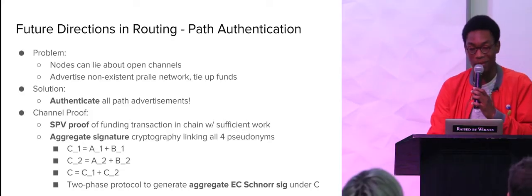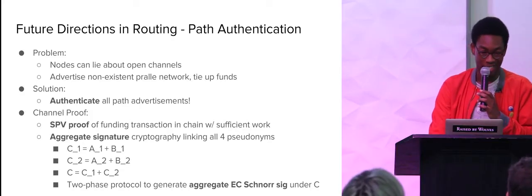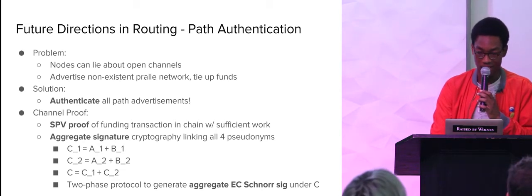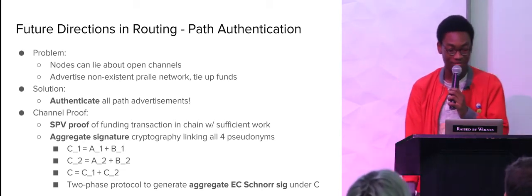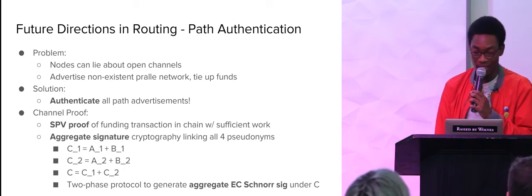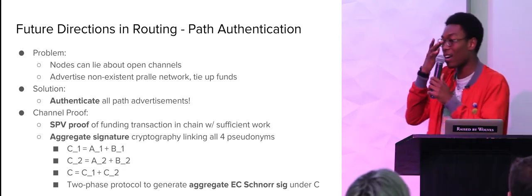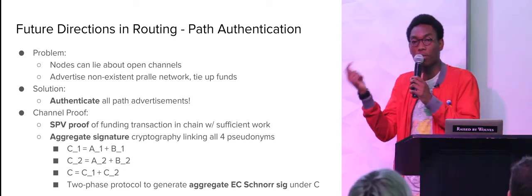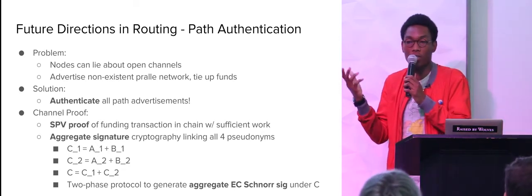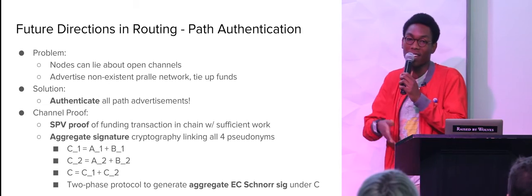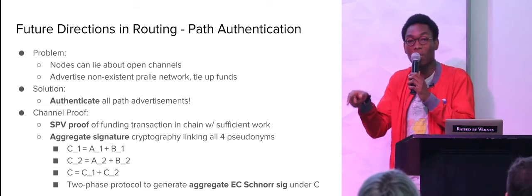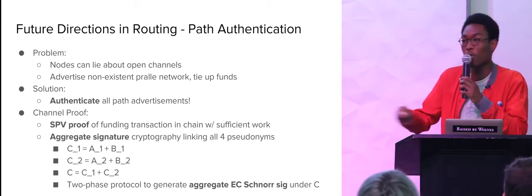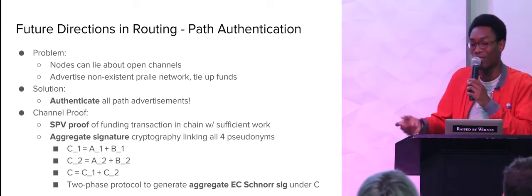To recap the demo: we brought up two nodes, opened a channel between them, and sent 2,000 satoshis as individual one-satoshi micropayments in about 1.8 seconds, achieving around 1,000 transactions per second — with about 70 milliseconds of latency between them. This is completely unoptimized. You can pull down the repo and it works on testnet or simnet.